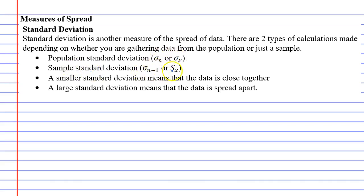There's also some notation here. On my calculator, and I think on most calculators, population standard deviation uses the symbol sigma x, and sample standard deviation uses the symbol sx.